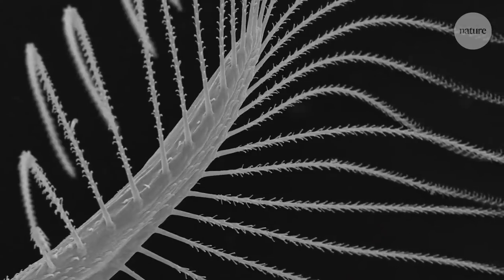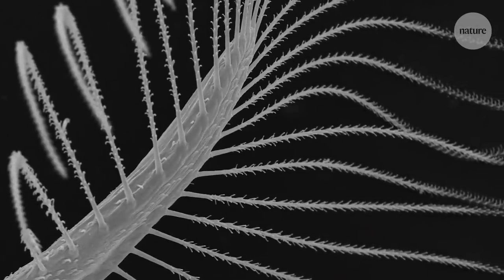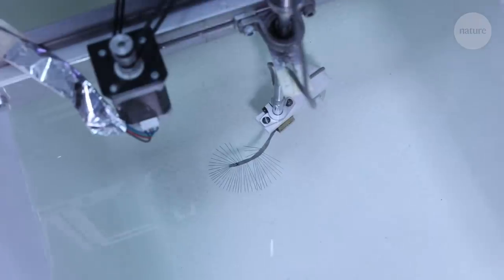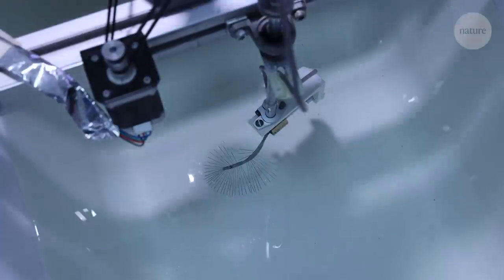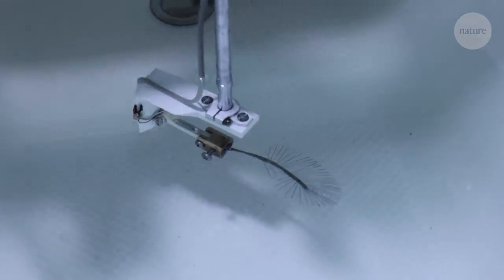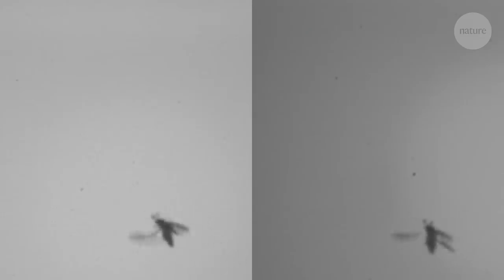It turns out that that bristly wing structure is key to the beetle's flight. Its unusual form saves on weight, without compromising much on strength or power at these scales. This makes it easier for the beetle to move its wing.